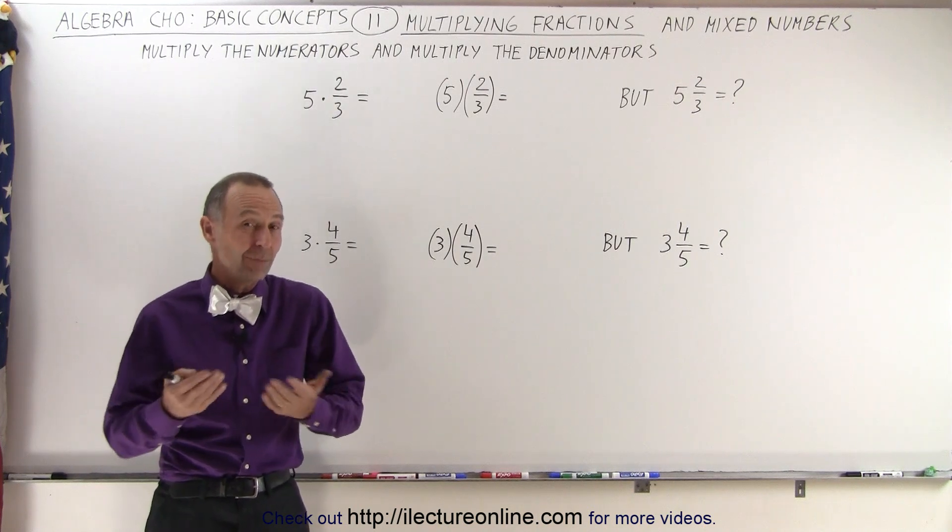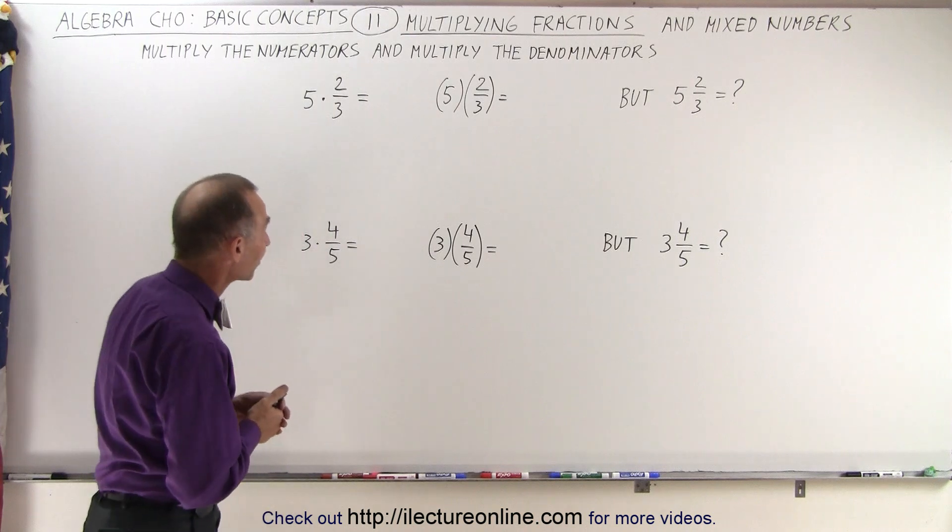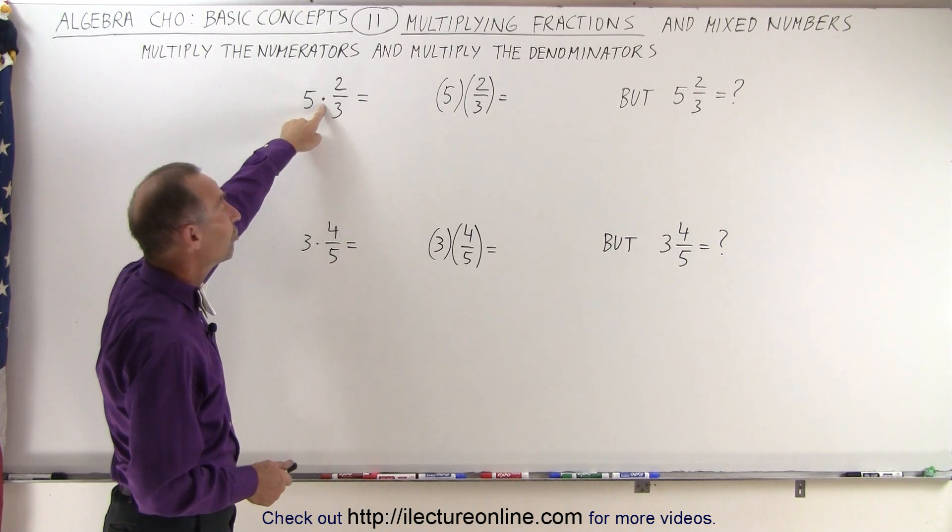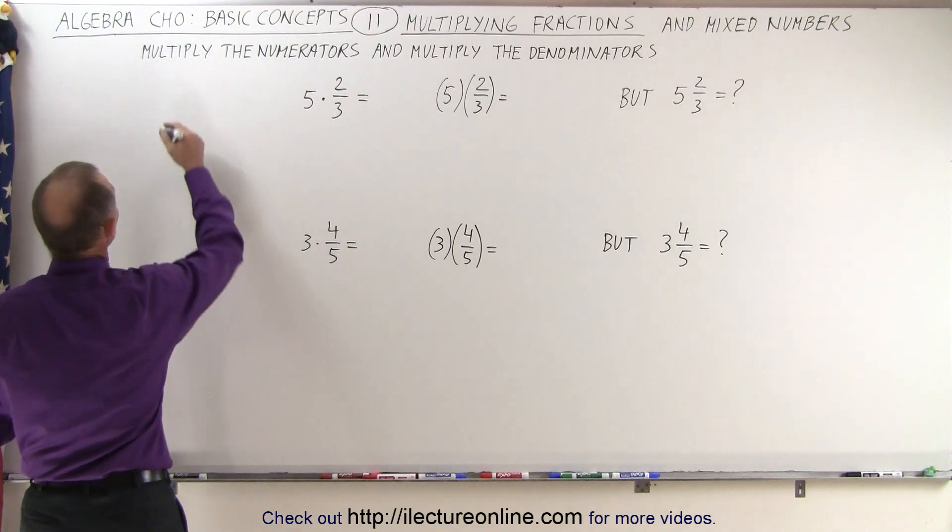What does it really mean? Is it the same as multiplying? Well, it turns out it is not. And here we have some examples. Let's say we see 5 with a dot and 2 thirds. This dot implies a multiplication.